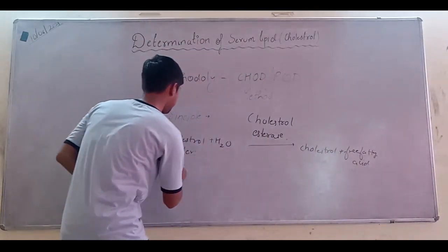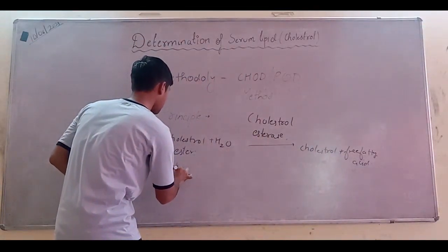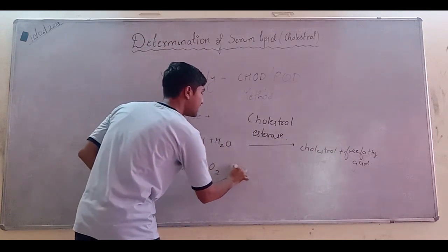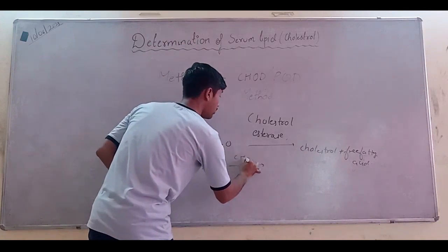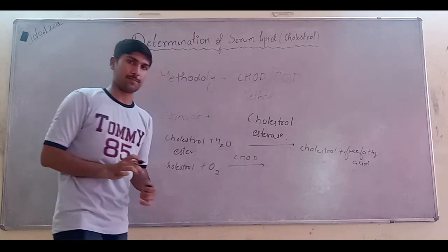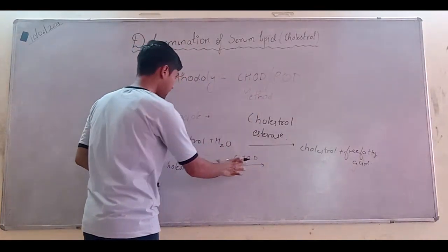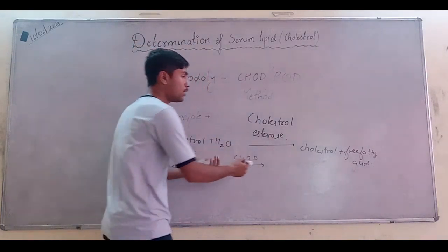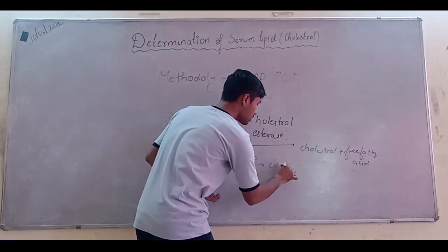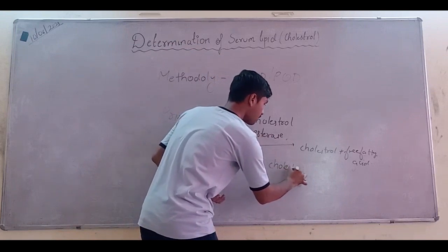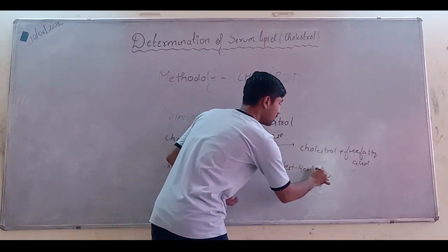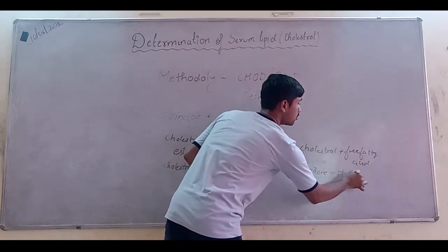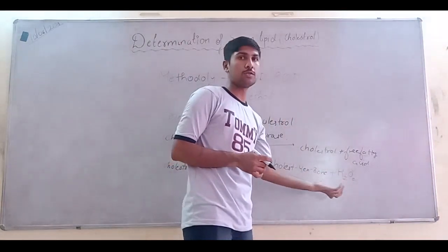Now this cholesterol is oxidized by another enzyme known as CHOD, which is cholesterol oxidase enzyme. Cholesterol oxidase oxidizes cholesterol that is formed in the first step into Cholest-4-en-3-one plus H2O2. What is this? H2O2 is hydrogen peroxide.